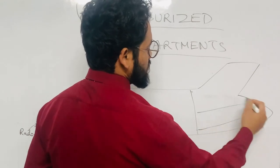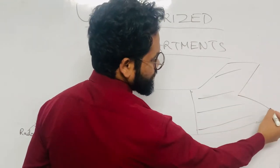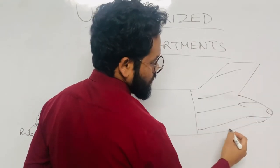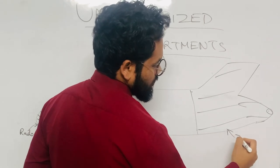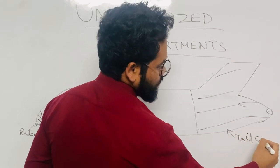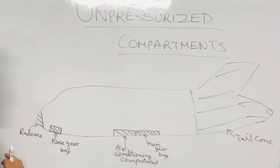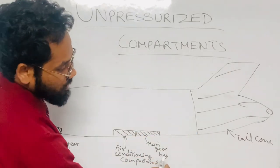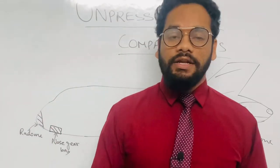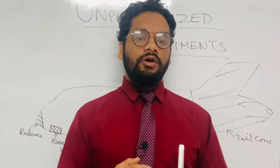And the other unpressurized area is the tail cone. So this section is unpressurized, okay? So this is the tail cone. So friends, all these areas—radome, nose gear bay, air conditioning compartment, main gear bay, and tail cone—are the compartments or areas which are not pressurized in the Airbus A320 aircraft.